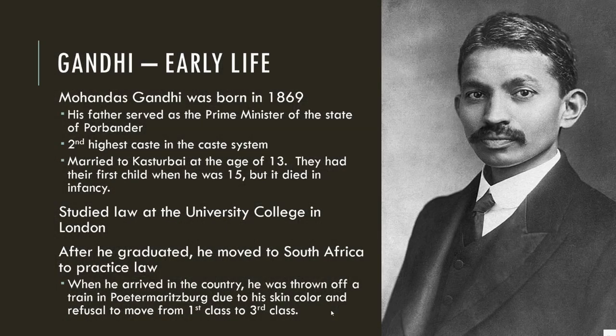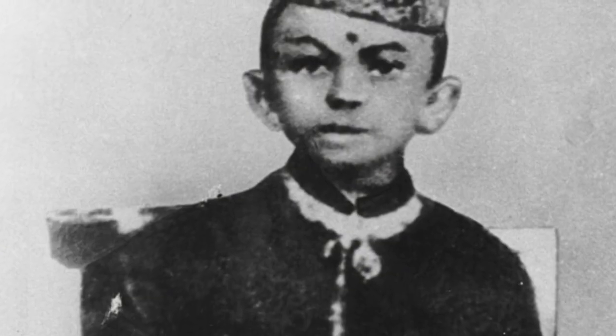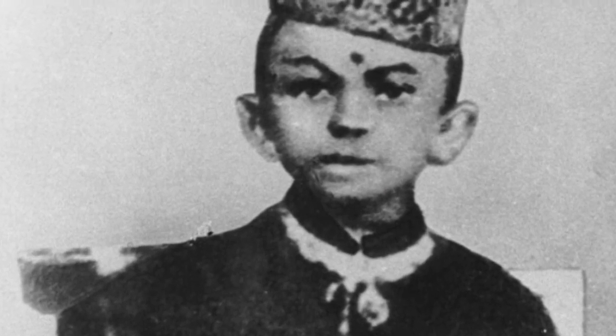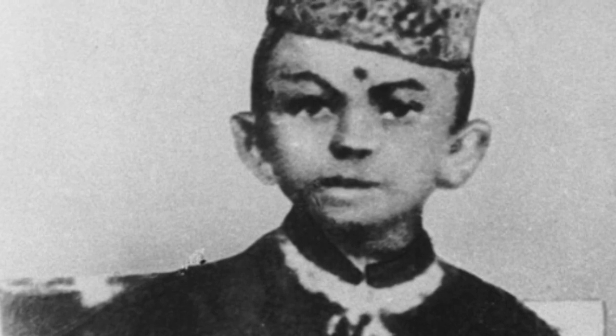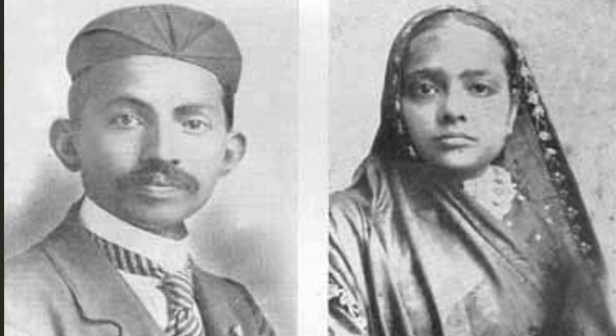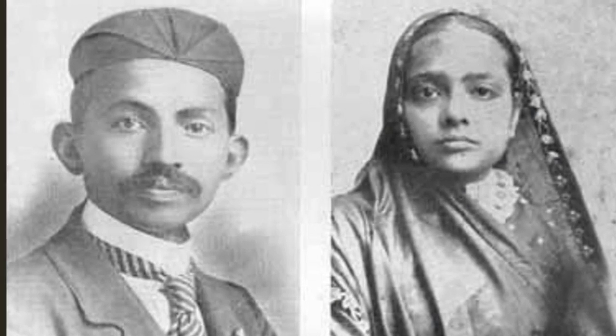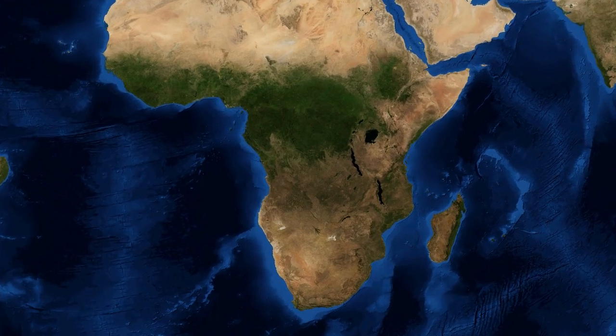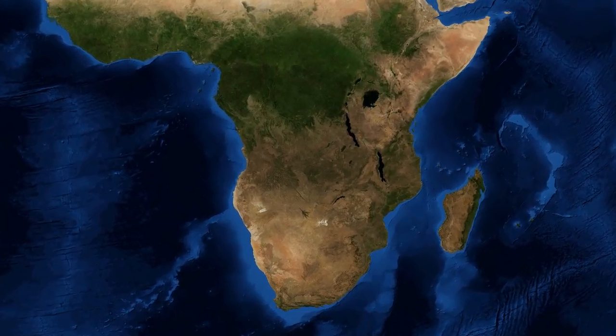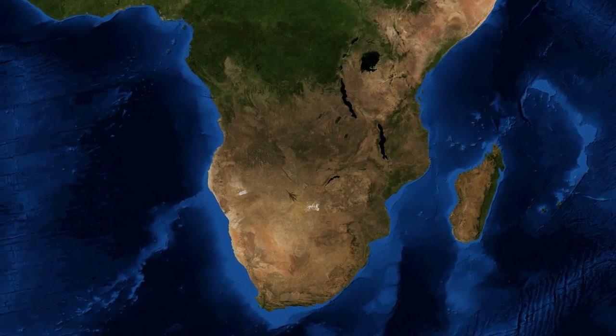Whenever you're talking about India's independence, Mahatma Gandhi is going to come up. He was born in India in 1869, into a family where his father served as a prime minister of a province within India, and he was a member of the second highest caste in the caste system of India. He married at the age of 13 in an arranged marriage, and he and his wife had their first child when he was 15; however, the baby died in infancy. Gandhi went to London to study law, and after receiving his law degree, he went to South Africa to practice — and this would be life-changing for Gandhi.